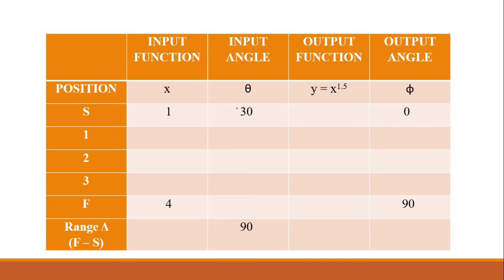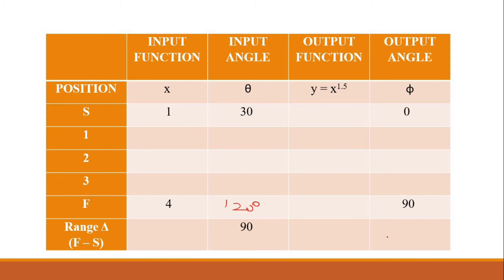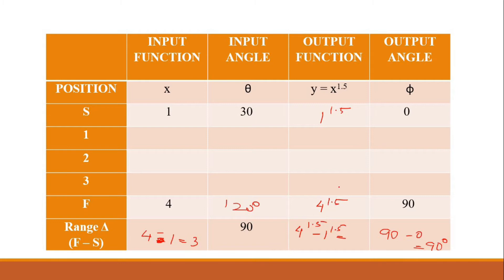The starting input angle is 30 degrees and the range is 90 degrees. Since range equals final minus starting, the final input angle is 30 + 90 = 120 degrees. For the output angle, range = 90 - 0 = 90 degrees. The range of x is 4 - 1 = 3. For y = x^1.5: starting y = 1^1.5 = 1, final y = 4^1.5 = 8, so the range of y is 8 - 1 = 7.